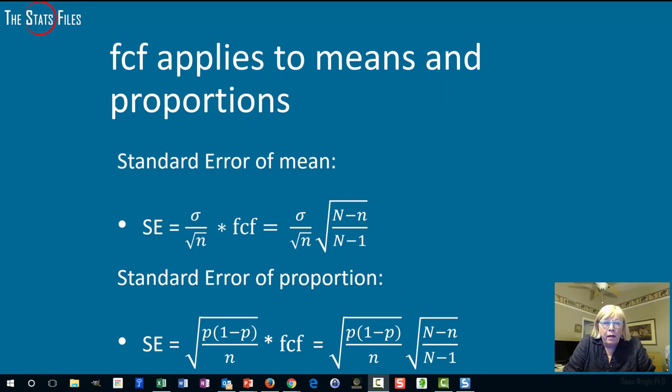The finite correction factor applies both to problems involving means and problems involving proportions. In both cases, we have to adjust the standard error. For the standard error of a mean, we just take the original standard error, which is sigma divided by the square root of n (the sample size), and multiply that times the FCF to get the adjusted standard error of the mean. If we're working with proportions, then the standard error is the square root of p times (1 minus p) divided by small n, and multiply that whole thing times the FCF again.